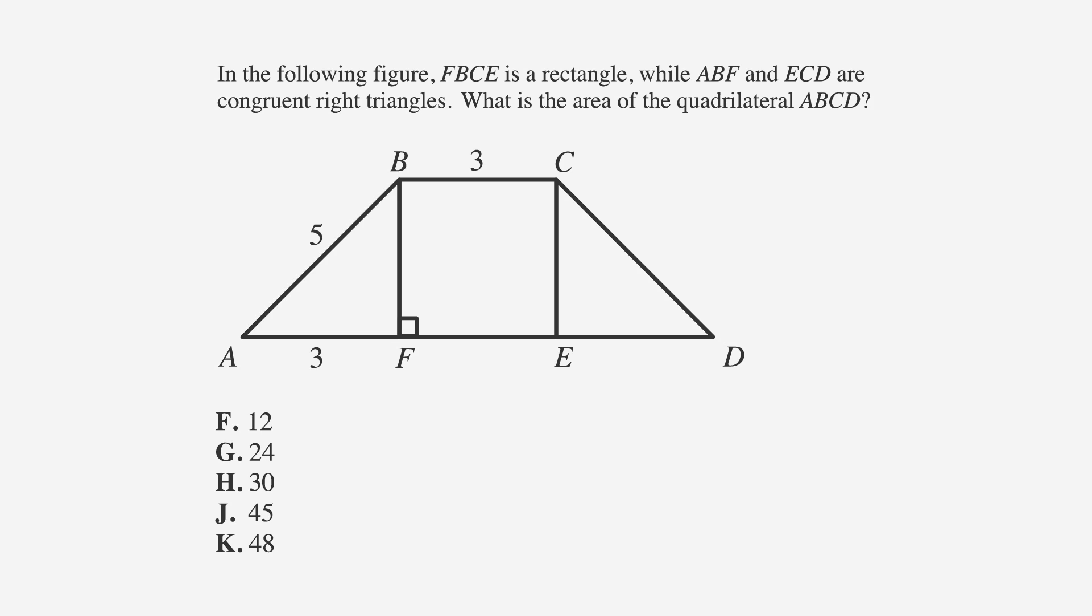Let's take a look at an ACT problem where triangles are hiding in a trapezoid. In the following figure, FBCE is a rectangle, while ABF and ECD are congruent right triangles. What is the area of the quadrilateral ABCD? F is 12, G is 24, H is 30, J is 45, and K is 48.